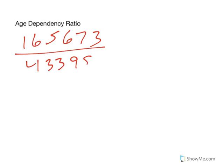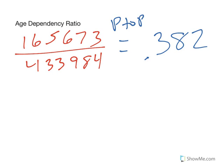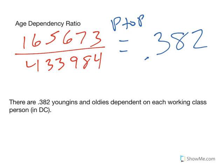Then the age dependency - we add the youngins and old ones together to get 165,673, divide it by our working class, and as a decimal we get 0.382. You'll notice the age dependency ratio is much lower in DC than in Indiana, and I'm sure there's all kinds of reasons for that, but I'm not going to get into that. There are 0.382 youngins and oldies dependent on each working class person in DC. Looking back, I probably should have had the location in each sentence because our first problem was Indiana, our second was Washington DC. If we have a location, I really should have specified that, and I apologize for not doing that earlier. We always want to be as detailed as possible in our sentences.